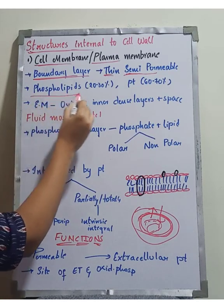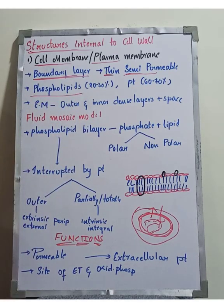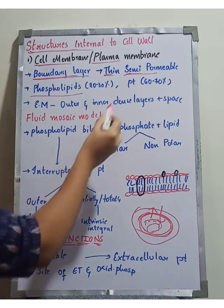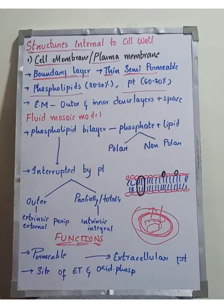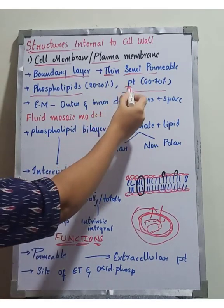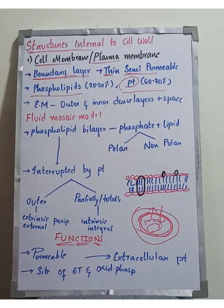The plasma membrane is made up of phospholipids, 20 to 30%, and proteins, 60 to 70%. So 60 to 70% of the plasma membrane is made up of proteins.